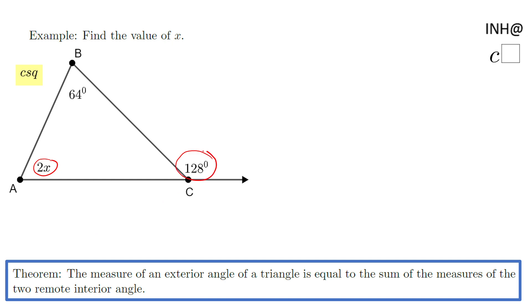That theorem tells us that 128 is equal to 2x plus 64, the sum of the remote interior angles. 2x and 64 equals the exterior angle. So that's the equation we can write. I'm going to subtract 64 to solve for x.